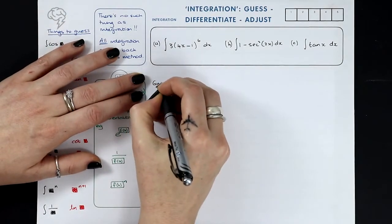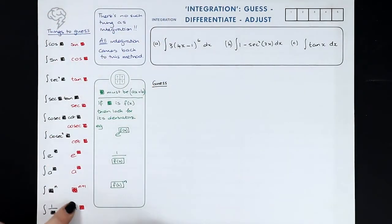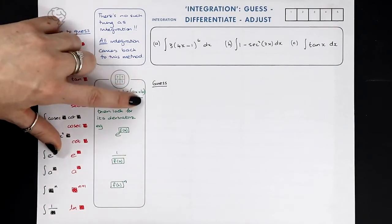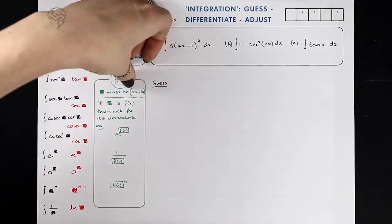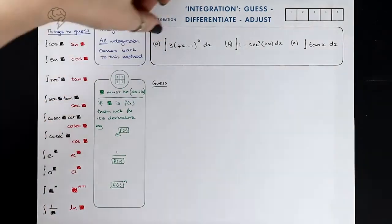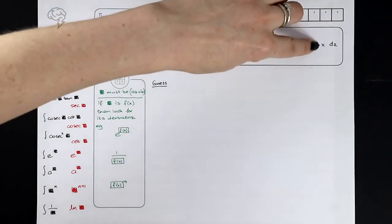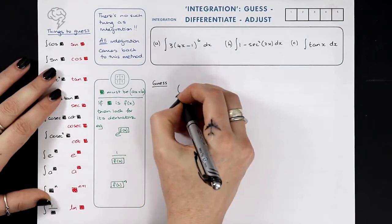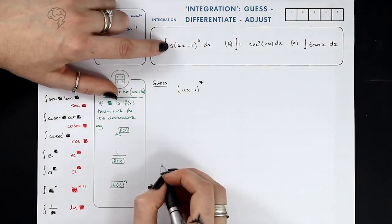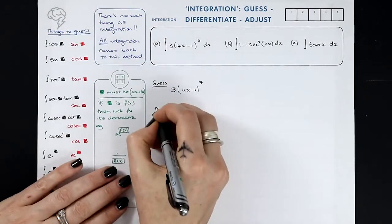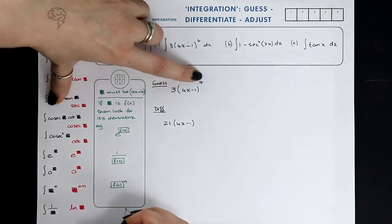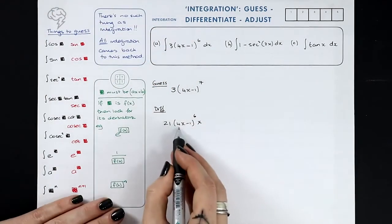Let's look at this first example. We've got something to the power of six. The something cannot have anything complicated in it — it just has to be x times a number, add a number. That's it. No squares, no roots, nothing like that. So we've got that exact thing to a power, and the guess is going to be that same thing but to a higher power. There's a 3 out front, so I'll include that as part of my guess. Now I differentiate using the chain rule: the 7 will come down, this changes to a 6, and then I multiply by the derivative of the inside, which is 4.